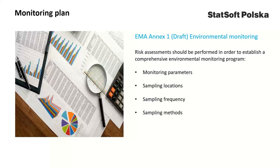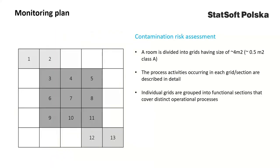According to Annex 1, a comprehensive environmental monitoring program should be established based on risk assessment that is used to define monitoring parameters, sampling locations, sampling frequency, and sampling methods. To develop a monitoring plan, we must therefore perform a contamination risk assessment. We start by dividing the room to be monitored into grids, having a size small enough to differentiate process steps while large enough to be practical — for instance, four square meters or half a square meter in class A — and the process activities occurring in each grid should be described in detail.